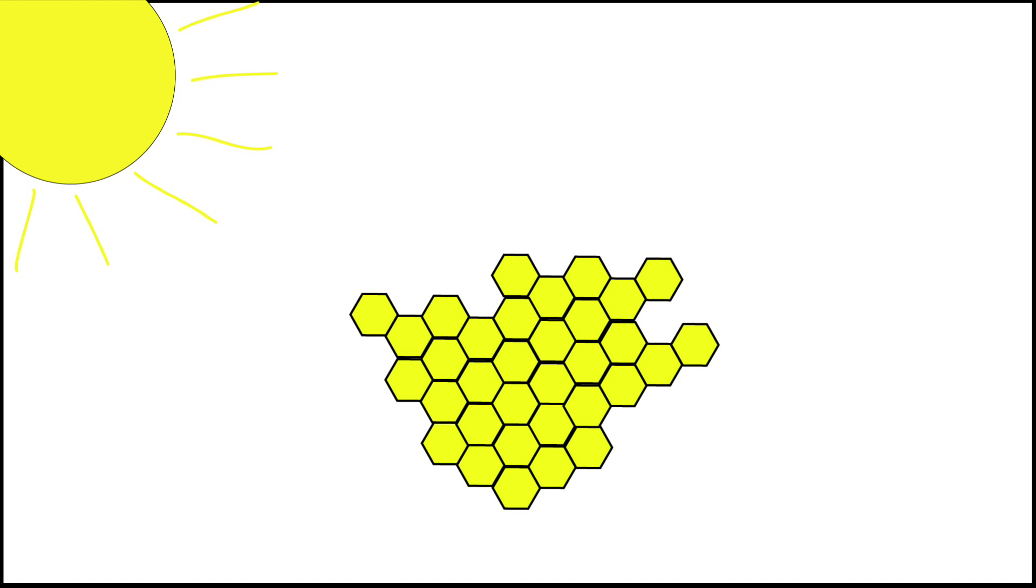As sunlight hits objects, certain wavelengths of that light are absorbed by the object, and other wavelengths are reflected. These reflected light waves are what we see and are what gives objects color.